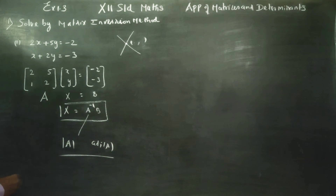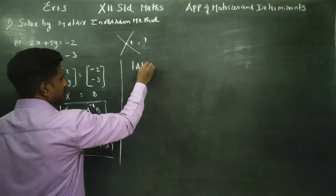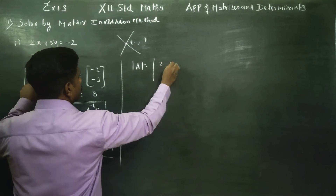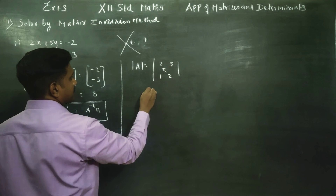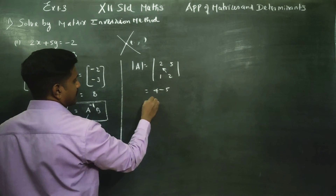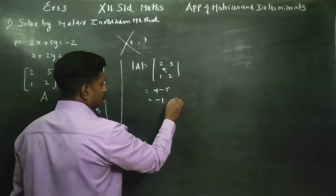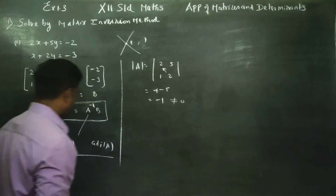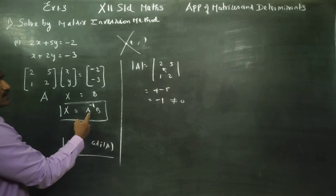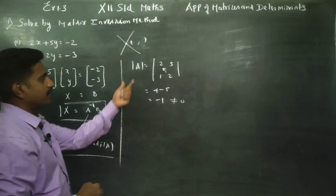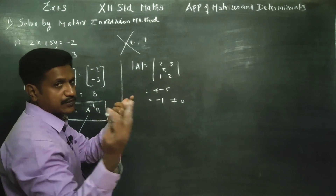First I am going for Determinant A. What is Determinant A? The matrix is [2, 5; 1, 2]. Right hand side minus left hand side: 4 minus 5 — the answer is minus 1. This is my Determinant A. This is not equal to 0, so the solution is possible.